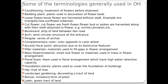Some terminology generally used in ornamental horticulture: ptomal conditioning — treatment of flower before shipment; bedding plant — plant used in decorating flower beds; loose flower — flowers harvested without the stem, e.g., marigold, rose, sunflower; cut flower — flowers harvested along with the stem, e.g., orchid, carnation, iris; and bold bed — a stripe of land between two rows.